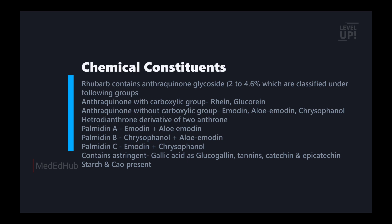So the anthraquinone glycosides: with carboxyl group are rhein and glucurrhein; without carboxyl group are emodin, aloe-emodin and chrysophanol. The heterodianthrone derivatives are palmidin A, B and C — combinations of emodin, aloe-emodin and chrysophanol. Also present: astringents, gallic acid, glucogallin, cinnamic acid, catechin, epicatechin, starch and calcium oxalate. This is very important.